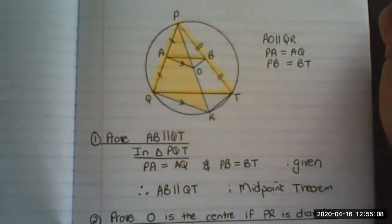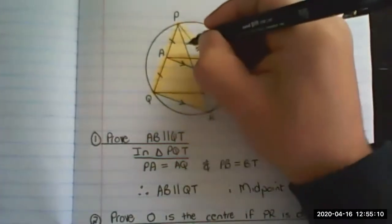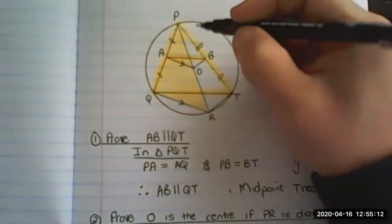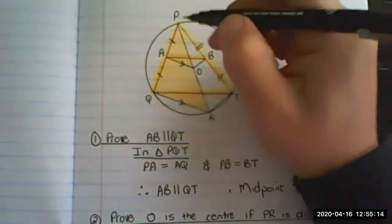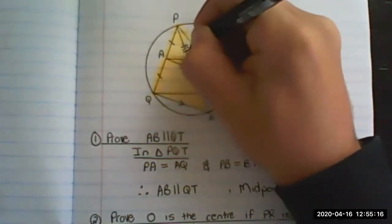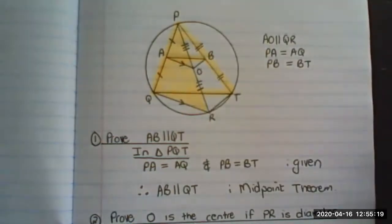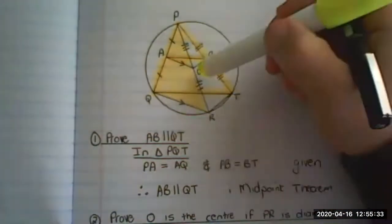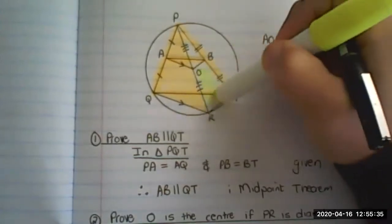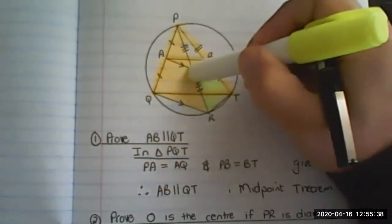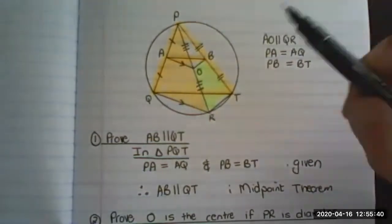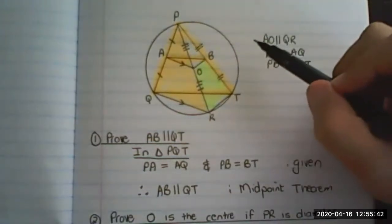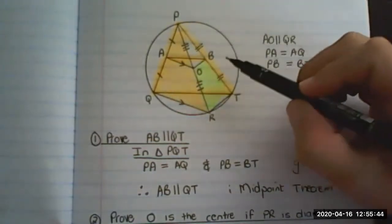So what we have proven now is we have added these lines equal to the other. All right, so the last question is prove that BORT is a trapezium. What you need to prove with a trapezium is that one pair of lines, one set of lines are parallel.